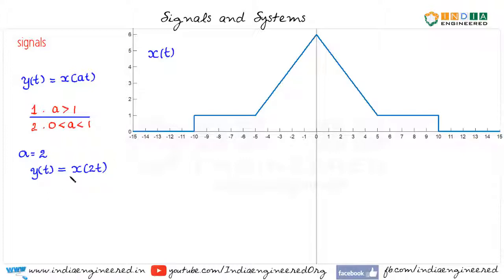We need to find how the plot of y of t, that is x of 2t, will look like. We have given x of t. We may follow a similar approach to what we have done for discrete time signals. That means we can calculate y of 0, that will be same as x of 2 into 0, that is x of 0. We can calculate y of 0.5 which is x of 1 and so on.